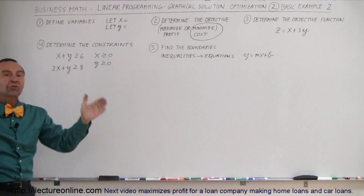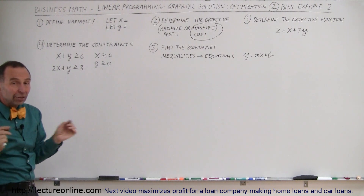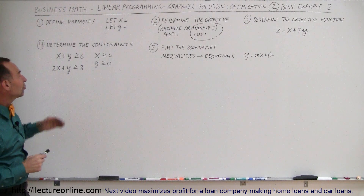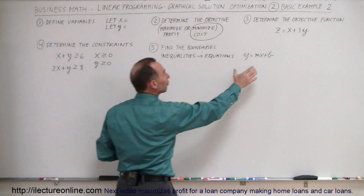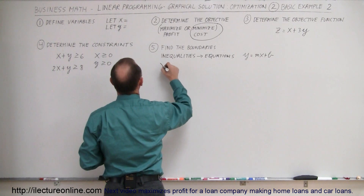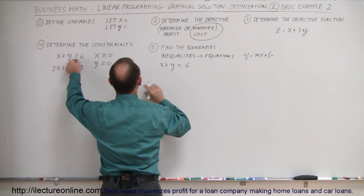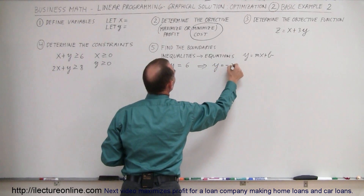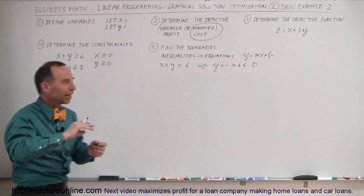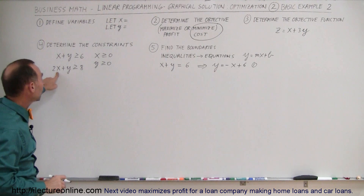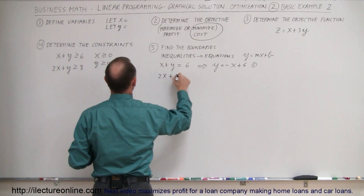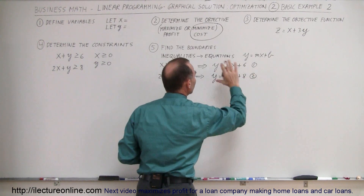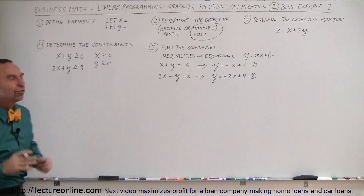The fifth step is to find the boundaries of the region we want to operate in by graphing. To do that, we take the inequalities and turn them into equations in the format y equals mx plus b. The first inequality, x plus y equals 6, becomes y equals negative x plus 6 — that's equation one. The second inequality, 2x plus y equals 8, becomes y equals negative 2x plus 8 — that's equation two. Now we have two equations to graph on an xy plane.